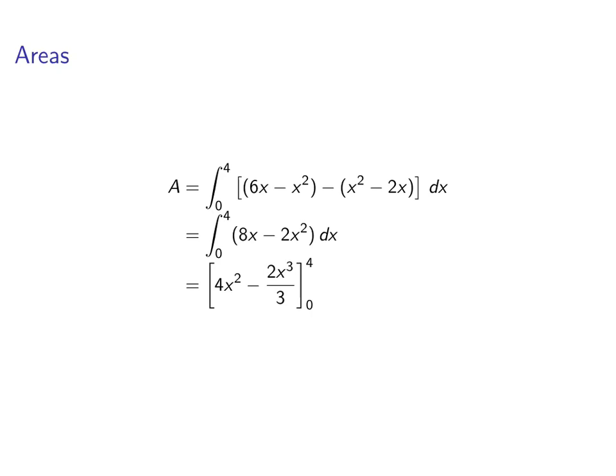Plug in the 0 to 4, and we get 64 minus 128 over 3. And the final answer will be 64 thirds. So that's the area that we want. Okay, that's all for now.